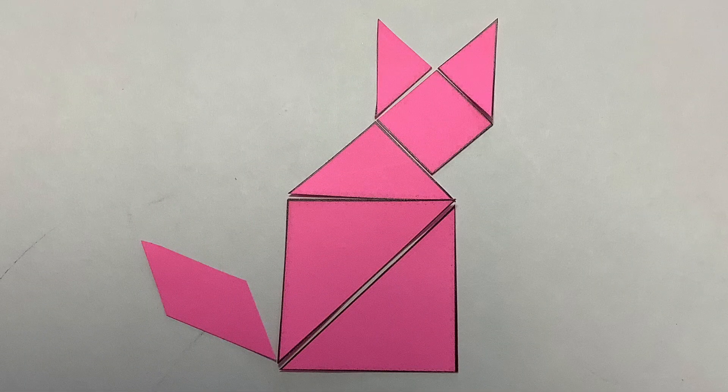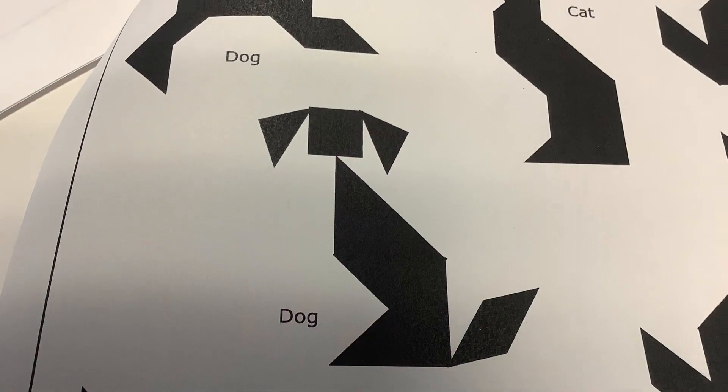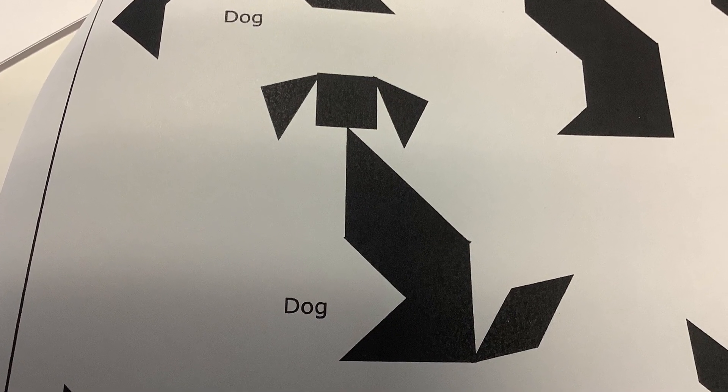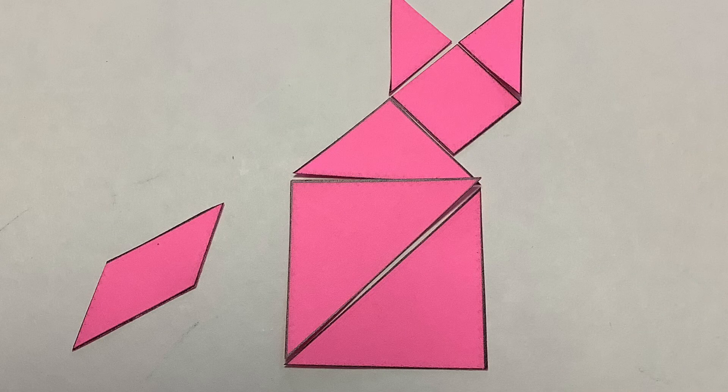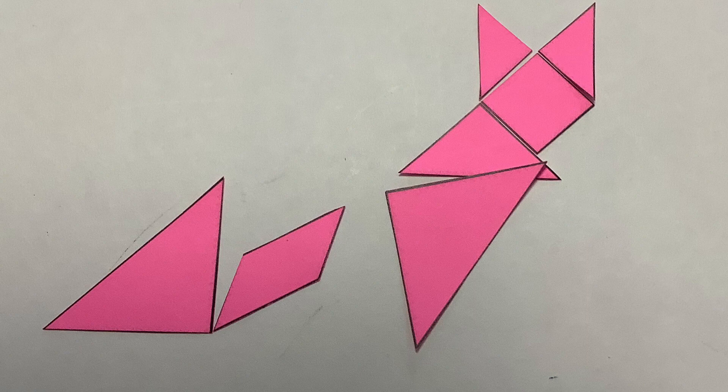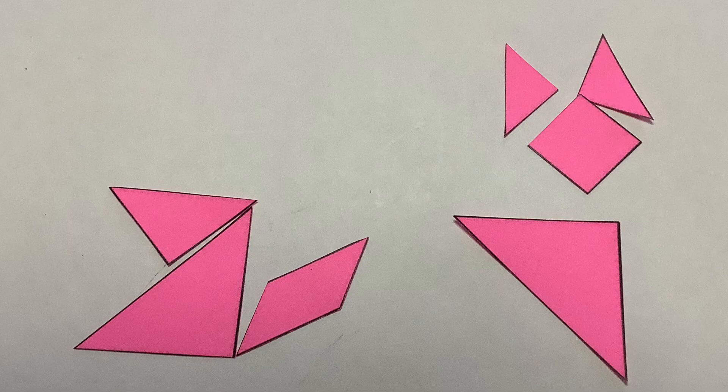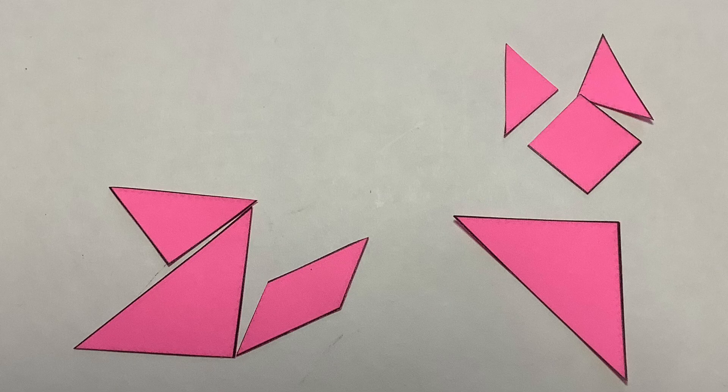For one of the dogs, we'll do the same process. I started with a parallelogram for the tail, added the big triangle for the body, then a medium triangle for the upper part of the body.